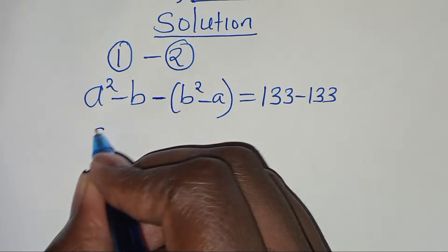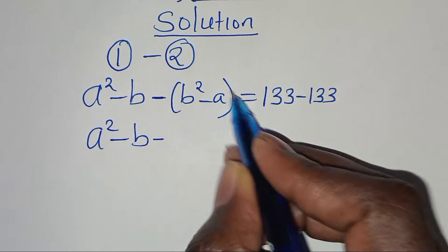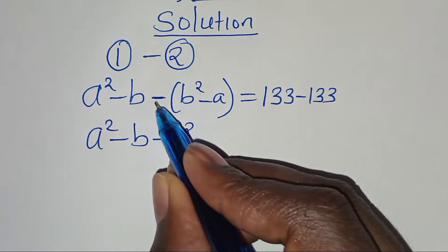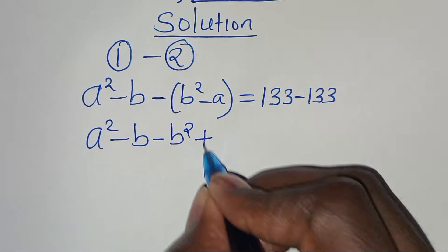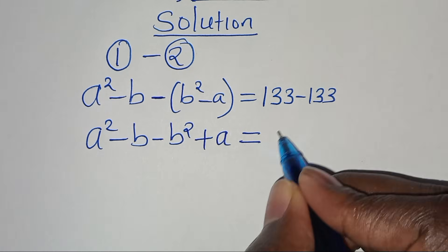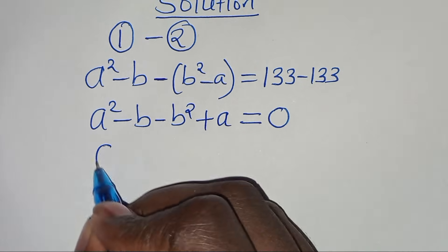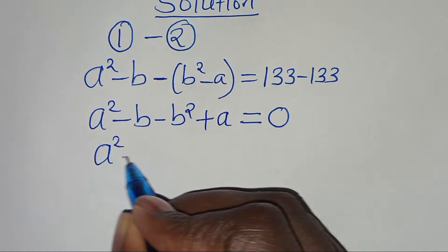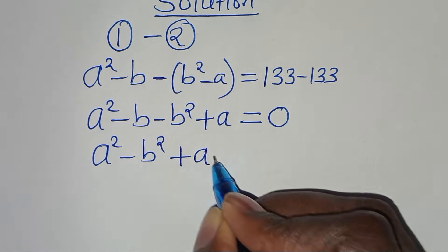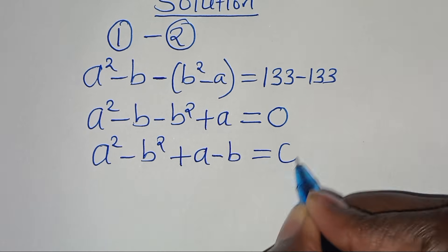Therefore we have a squared minus b, opening the parentheses: minus b squared, minus times minus a gives plus a, and this is equal to 1/3 minus 1/3, which equals 0. So we have a squared minus b squared, plus a minus b, equals 0.